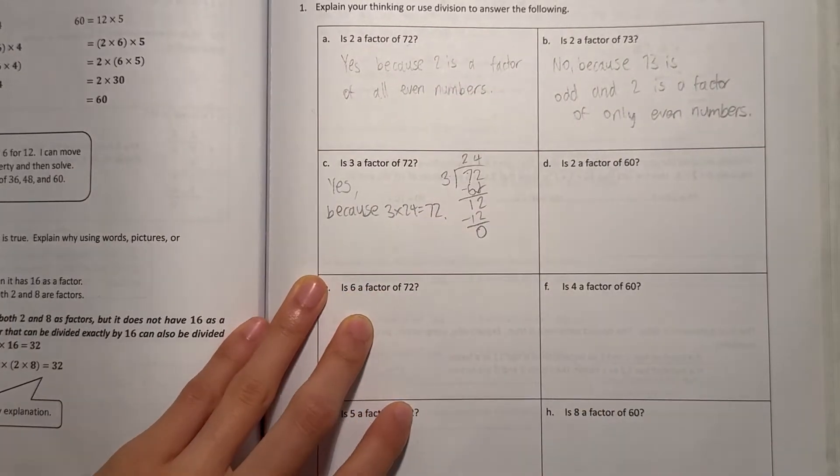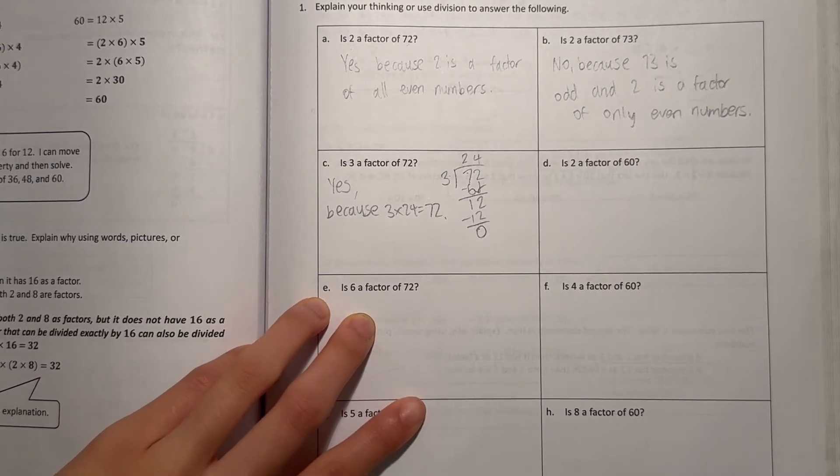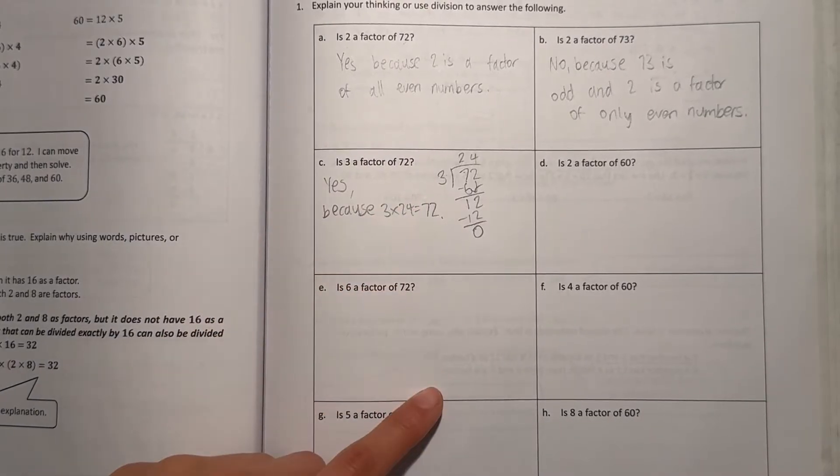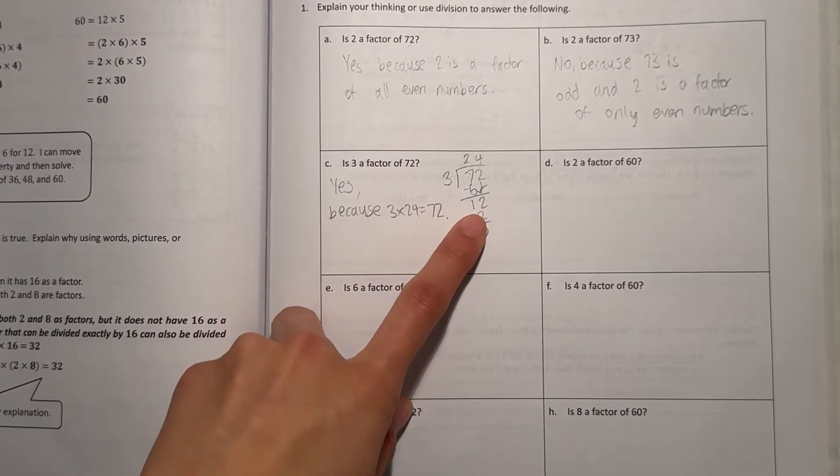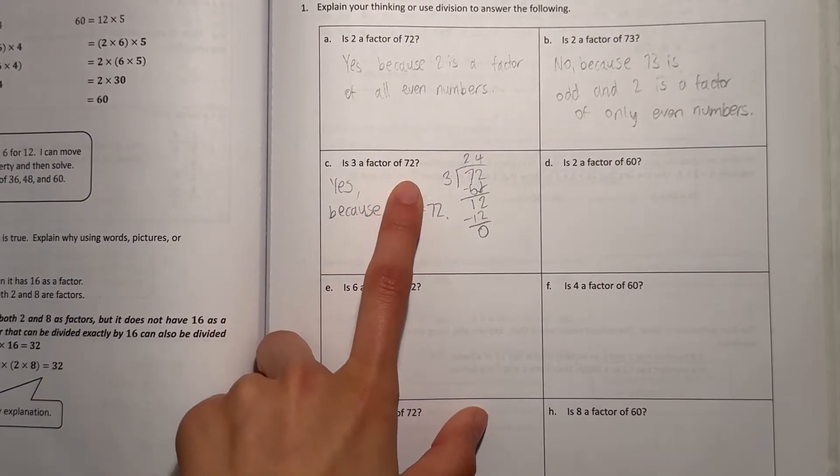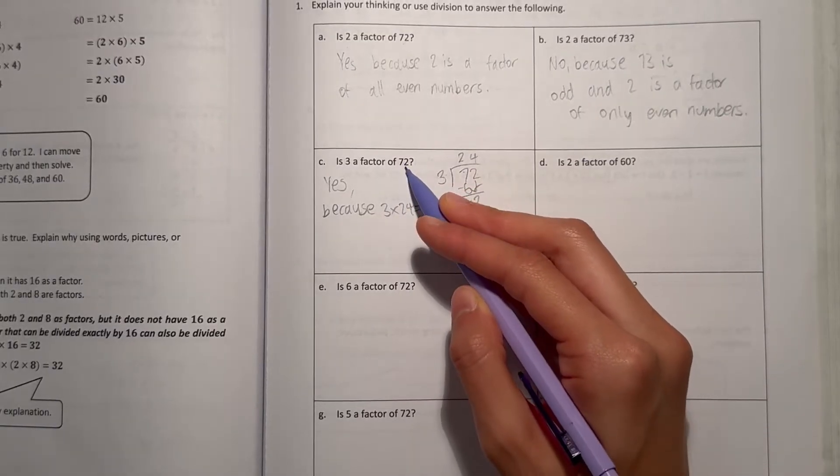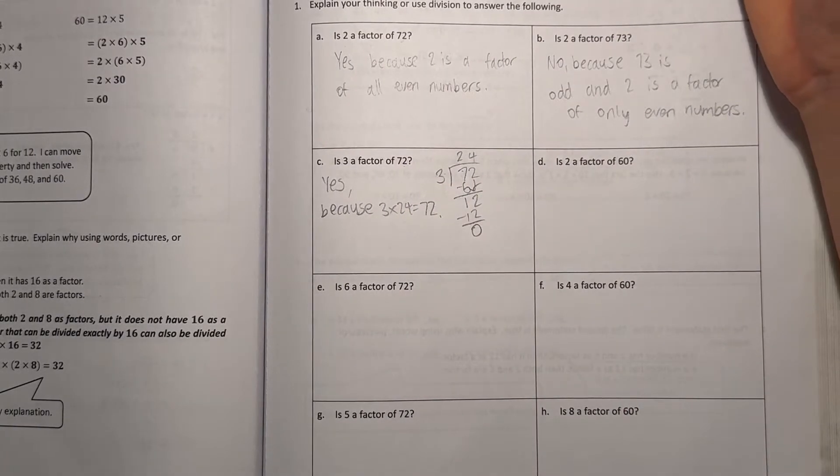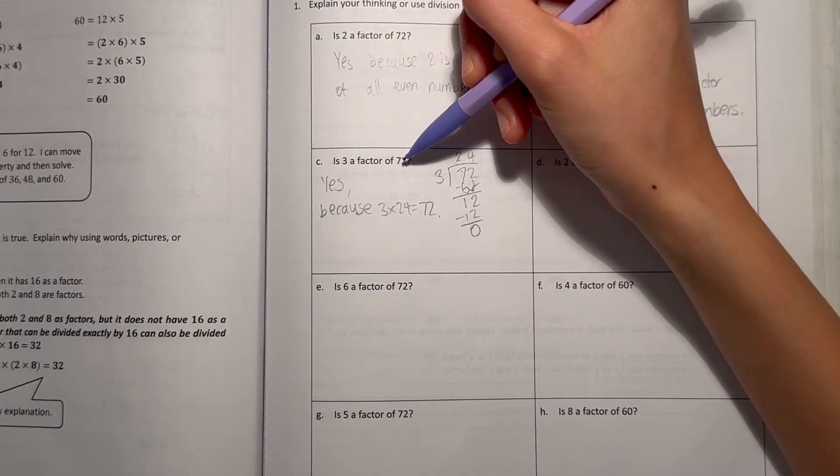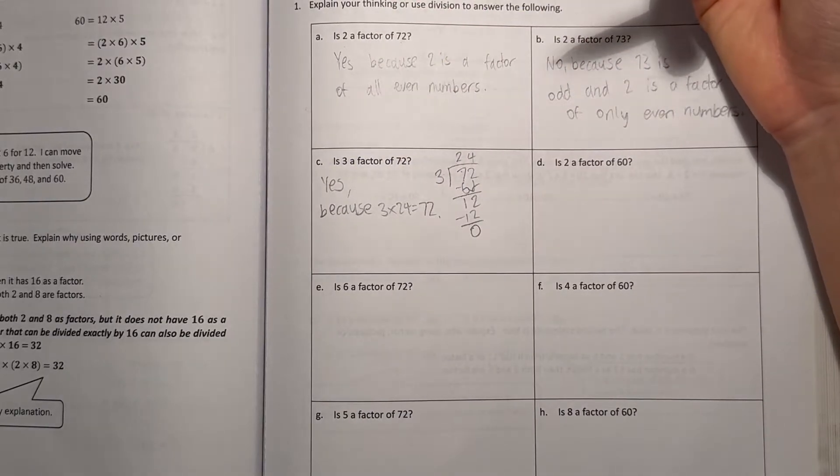And also a fun fact, if you want to know if a number is divisible by 3, what you can do is add up the digits of that number. But if we want to look at 72, we can add the digits of 72, which is 7 and 2. 7 plus 2 is 9, and since 9 is divisible by 3, because 3 times 3 is 9, then we can automatically know that this number, 72, is divisible by 3. So that's just a fun fact.